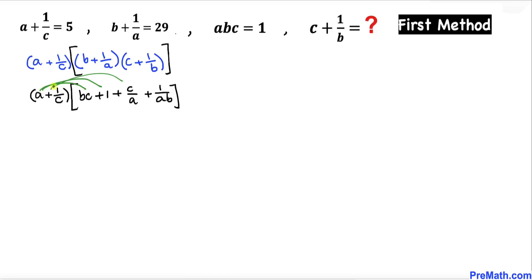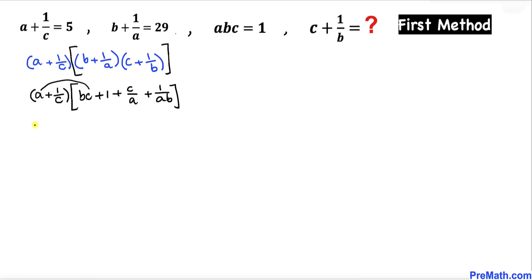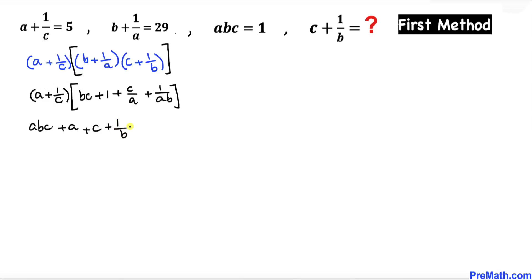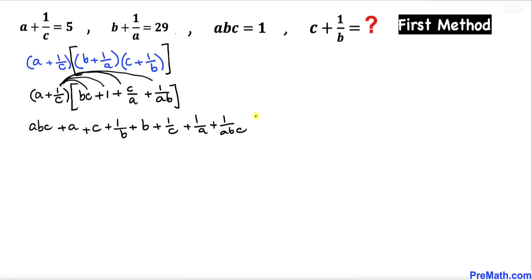Now we distribute again. a times bc gives us abc, plus a. Then a times c over a gives us simply c, and a times 1 over b gives us 1 over b. Then 1 over c times bc gives us simply b, plus 1 over c times 1 is 1 over c, and likewise this gives us 1 over a, and finally 1 over abc.